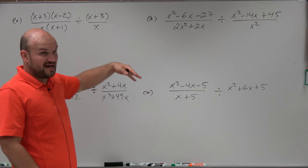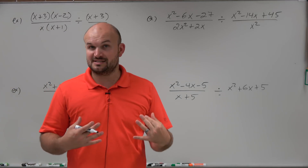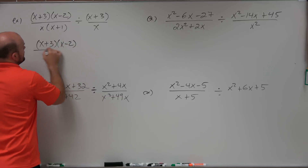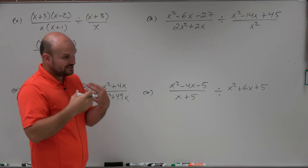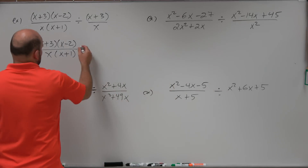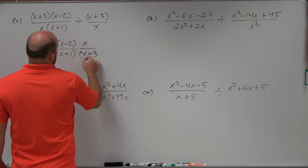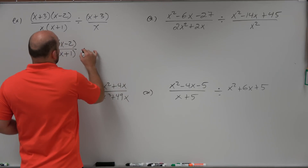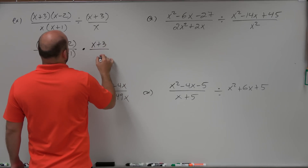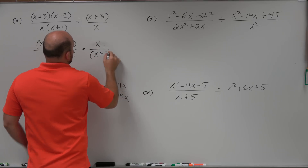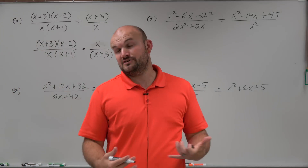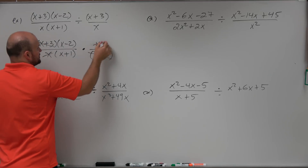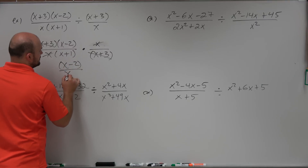The first example is already factored, so I'm going to rewrite it as a multiplication problem and write it as one big fraction. We have (x+3)(x-2) all over x(x+1), times x over (x+3) — that's our reciprocated divisor. Now we apply the division property: terms that are the same in numerator and denominator divide to 1. The (x+3)'s and the x's cancel, and we're left with (x-2) over (x+1).